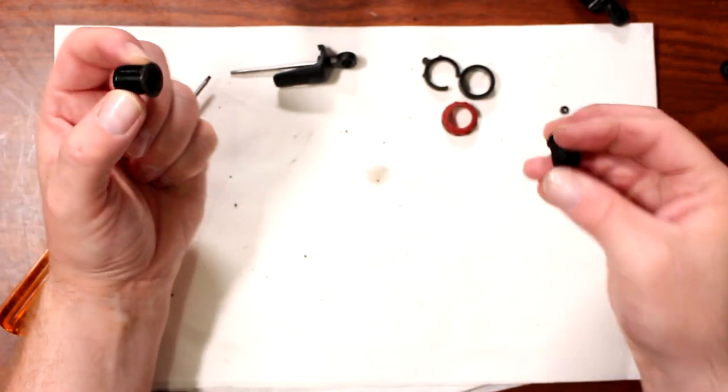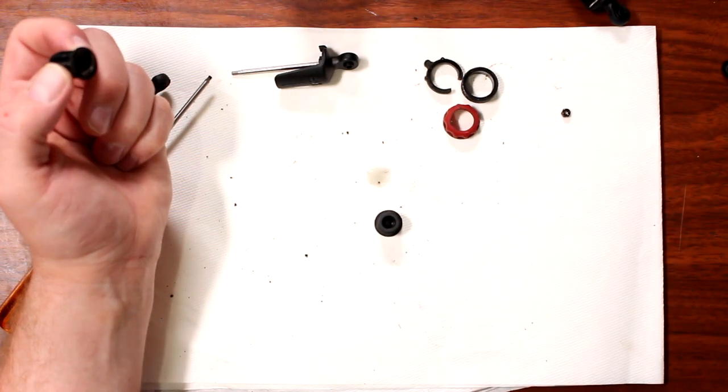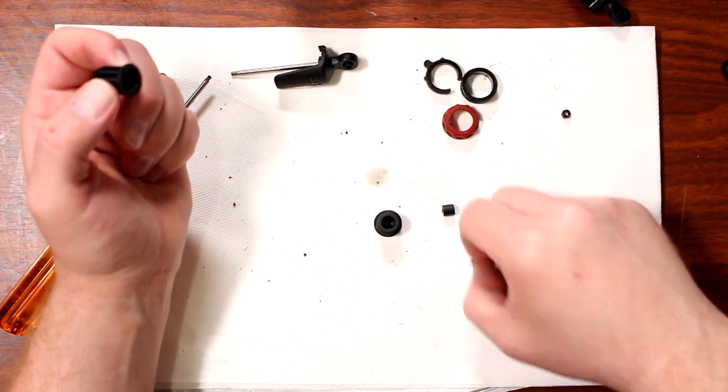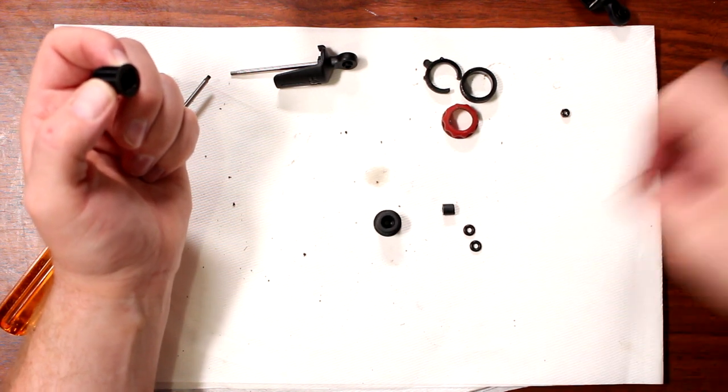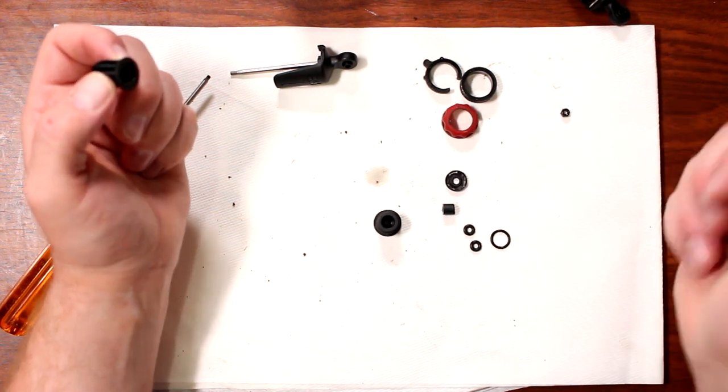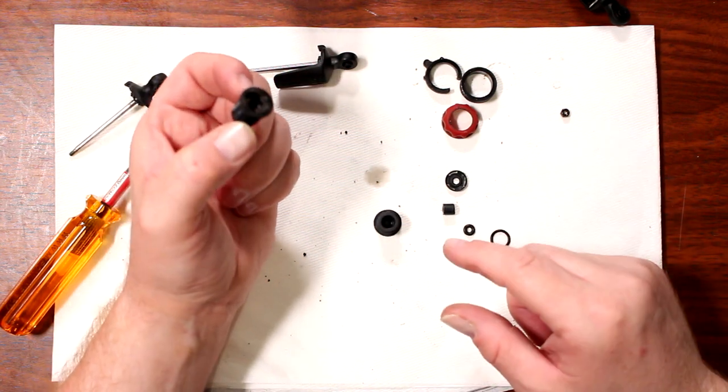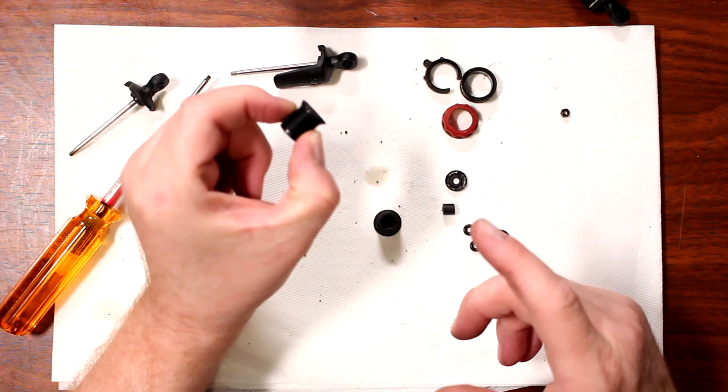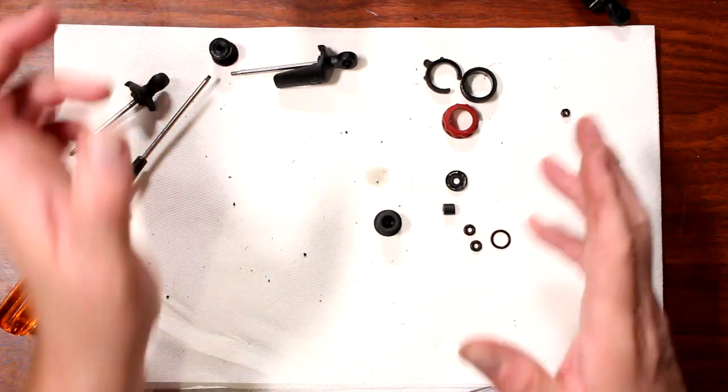Now all of this right here, these are the parts to rebuild your shock from leaking. One of the reasons the shock didn't have any oil is because it started leaking. You could reuse sometimes, but I rather rebuild it brand new.